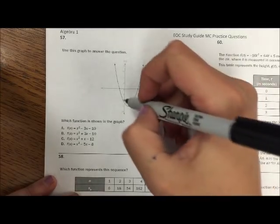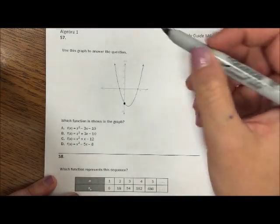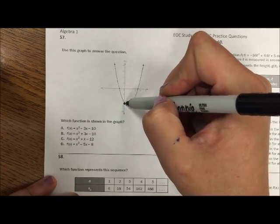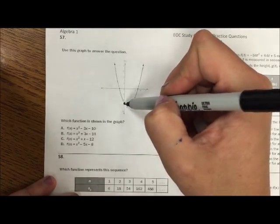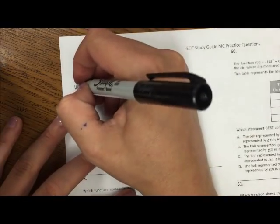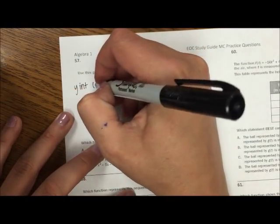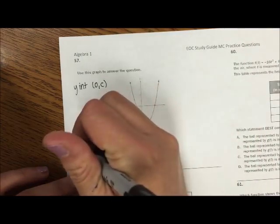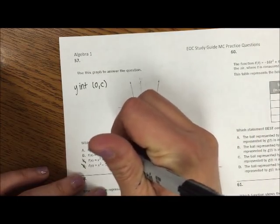We have a parabola whose y-intercept looks to be, let's see, 16, 14, 12, 10, negative 10. So I know that for quadratics, the y-intercept is at 0 and at the c-value. Okay, so A and B are the only ones whose c-values are negative 10.